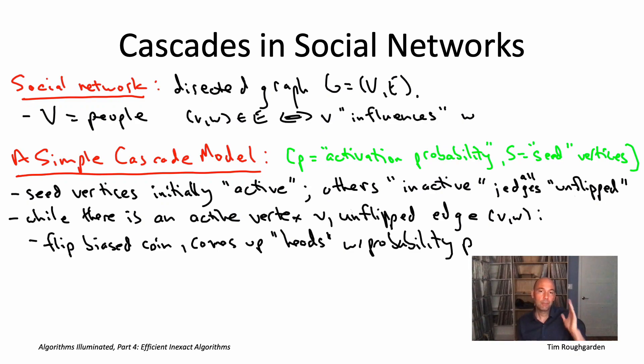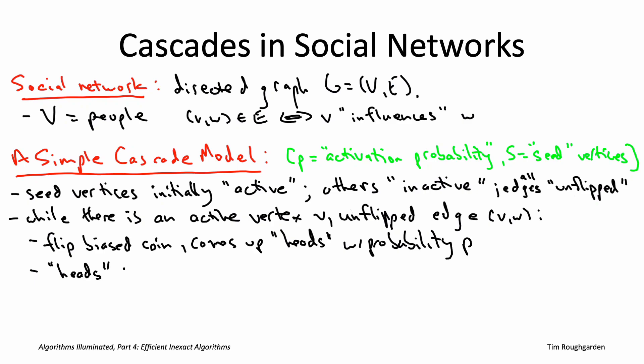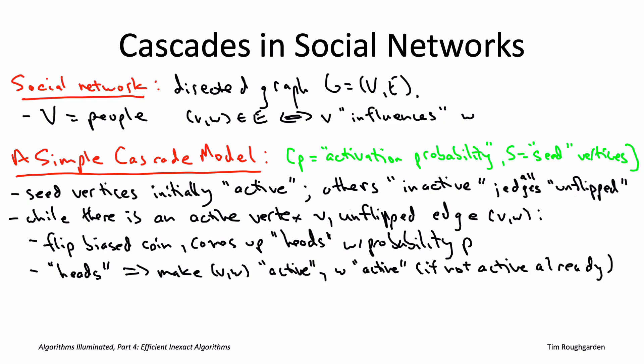If V tweeted a link and W clicked on it, that's a successful activation — that corresponds to heads. If W just ignored the link and never clicked on it, that's the 80% case, tails. In the event the coin comes up heads, we change the status of both the edge and possibly vertex W. The edge is no longer unflipped — we call it active. W may have been active already, or if previously inactive, their status changes to active. If the coin comes up tails, that's a failed influencing opportunity. We change the edge's status from unflipped to inactive, and W's status stays whatever it was before. More and more vertices keep getting activated until all edges going from an activated vertex have been flipped. That's when the process stops.